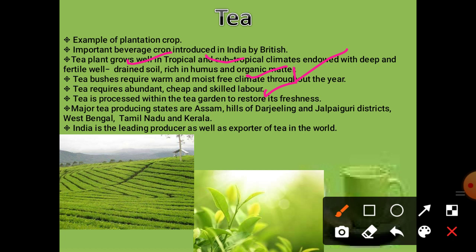Major tea-producing states are Assam, the hills of Darjeeling, Jalpaiguri district of West Bengal, Tamil Nadu and Kerala. India is the leading producer as well as exporter of tea in the world. Assam stands first in the production of tea.